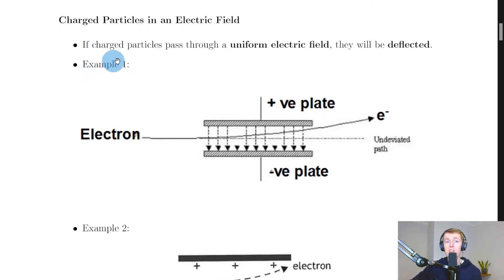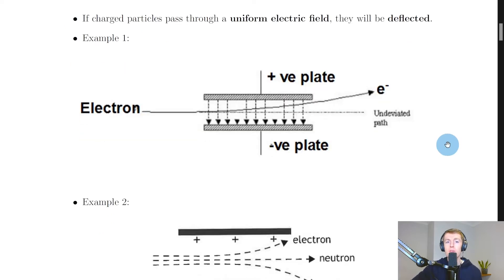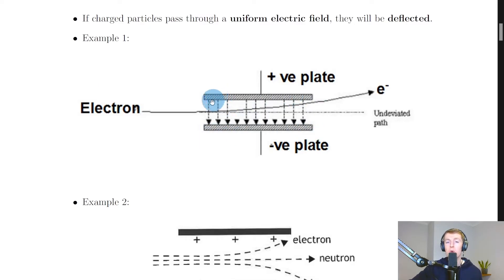If charged particles pass through a uniform electric field, which we saw in the previous theory video, then they will be deflected — they'll move because there is a force exerted on them. The first example is for an electron. This is our uniform electric field set up between two parallel plates, with the positively charged plate on top and the negatively charged plate on the bottom, so the electric field lines go down from positive to negative.